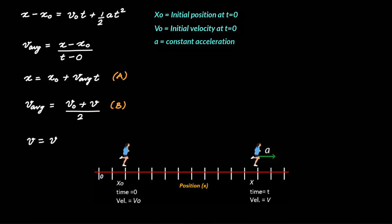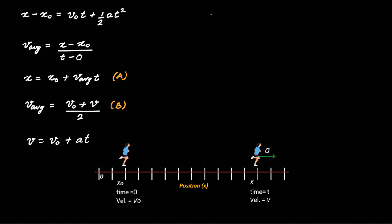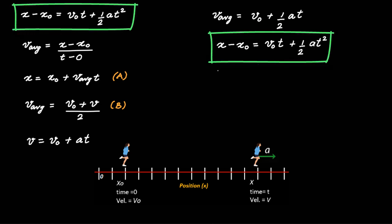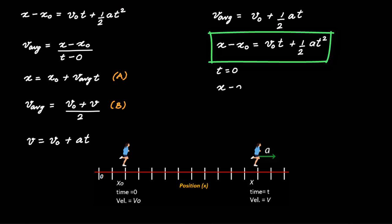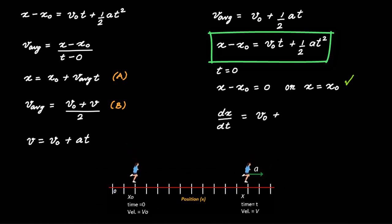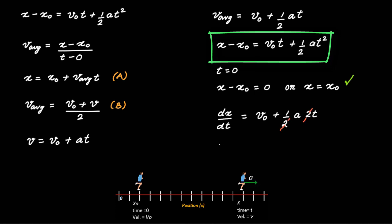Using the equation v = v₀ + at derived earlier and substituting v into the average velocity expression, we get v_average = v₀ + ½at. Substituting this back, we get x − x₀ = v₀t + ½at². To check this equation, putting t = 0 gives x = x₀, which is true. Taking the derivative dx/dt = v₀ + at, or v = v₀ + at, which is also true.